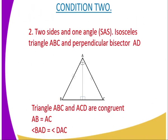In condition number two, two sides and one angle are the ones which are supposed to be equal. Two sides of one triangle are equal to two sides of the other triangle. And also one angle of one triangle is also equal to the other one. And in this case, you can see that there is a triangle ABC. And therefore, in the triangle ABC, it is an isosceles triangle whereby side AB is equal to side AC.